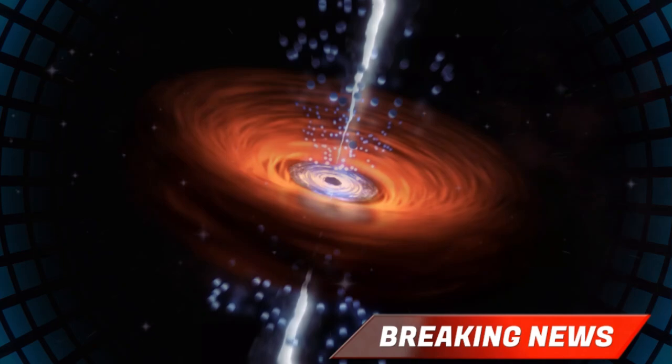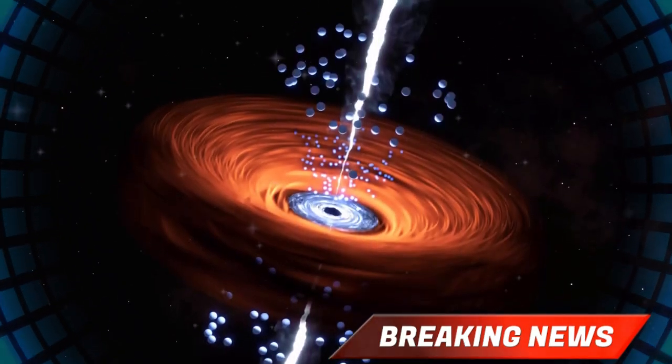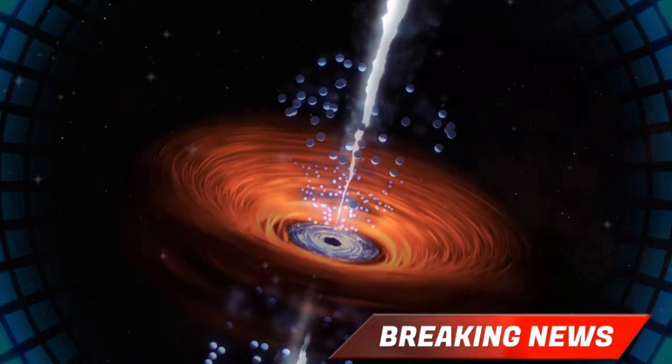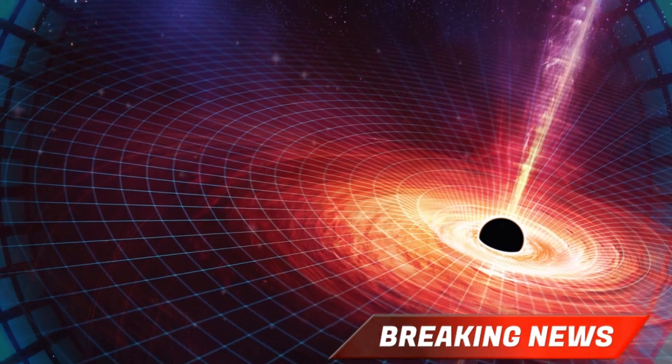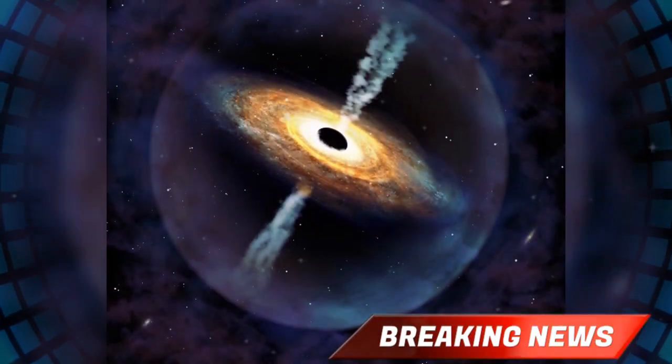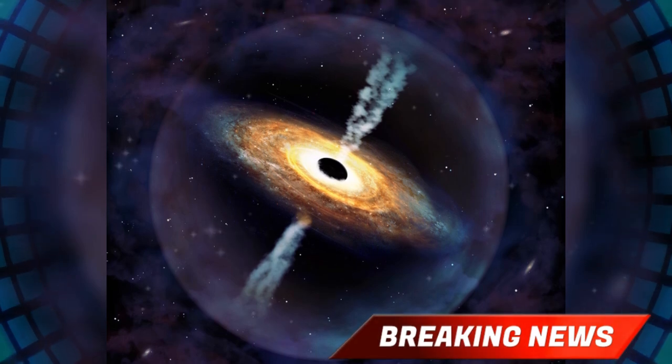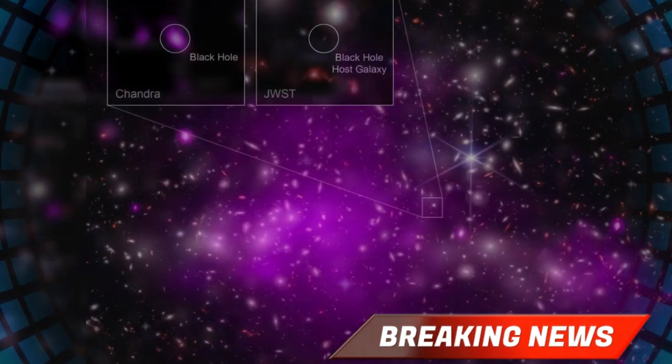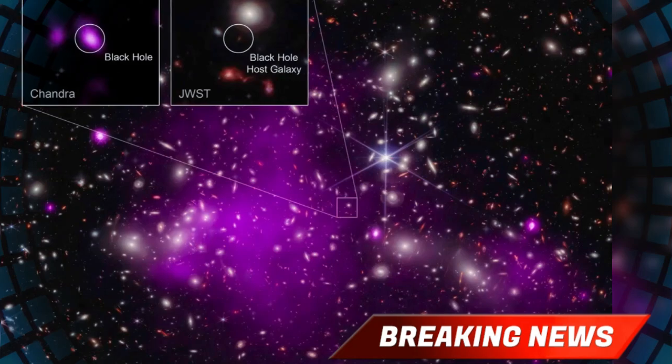The outward radiation should, in theory, push back against the incoming material, creating a ceiling for how fast the black hole can grow. Think of it like filling up a balloon. There's only so much air you can pump in before the pressure fights back. For decades, astronomers have used this rule as the gold standard of black hole growth.